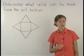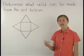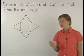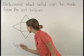The four triangular faces tell us that it's a pyramid, and the square base tells us that it's a square pyramid. So the net shown here can be folded to form a square pyramid.